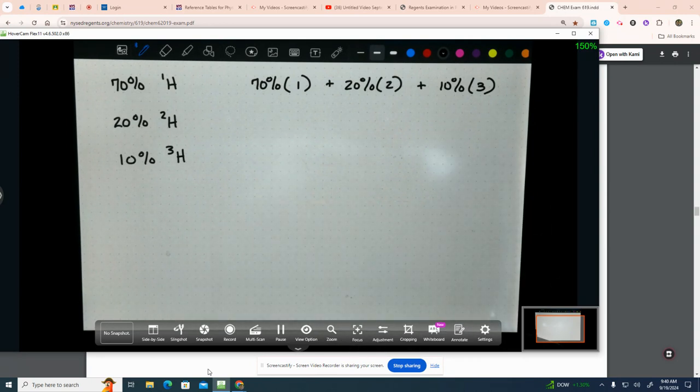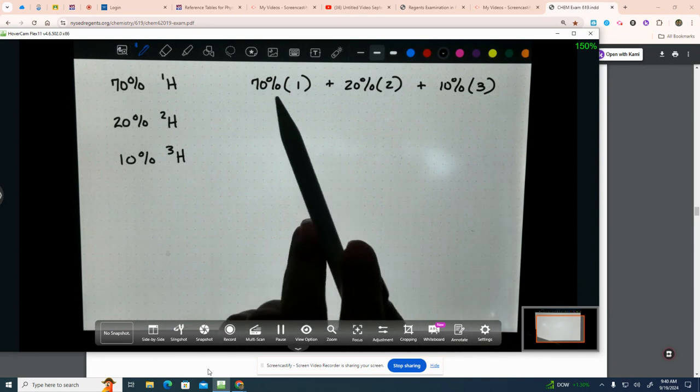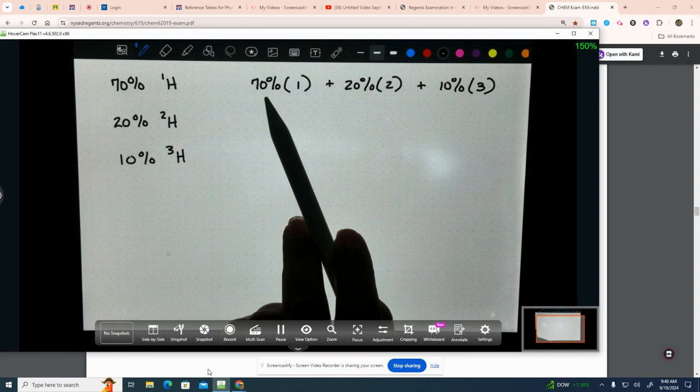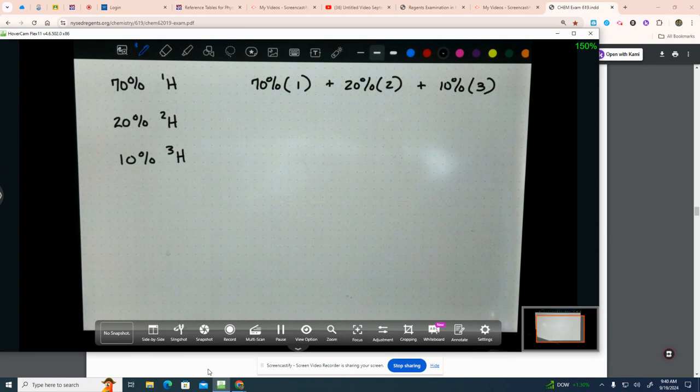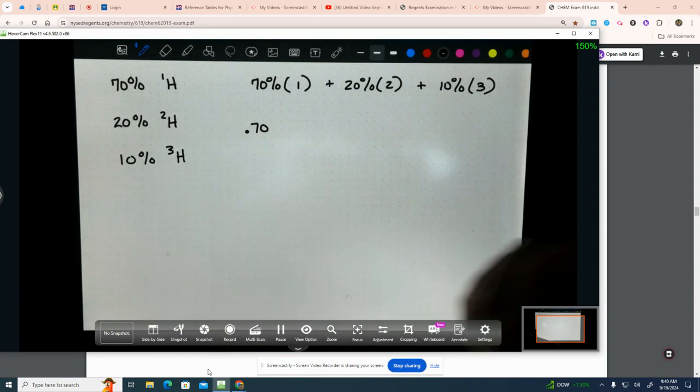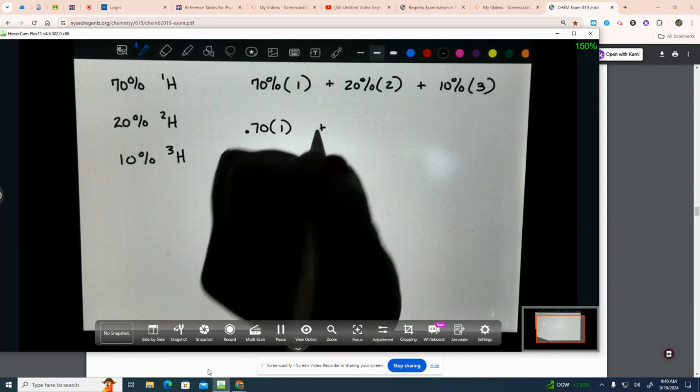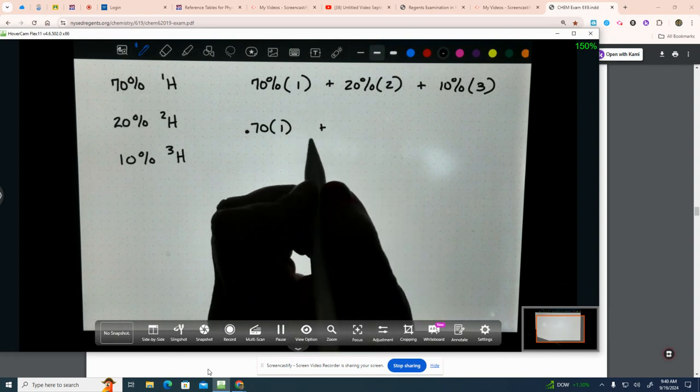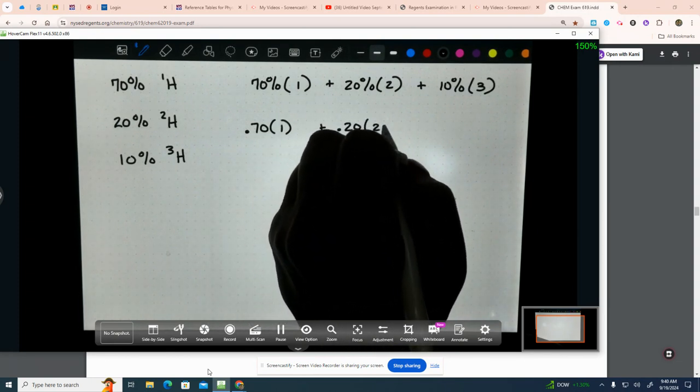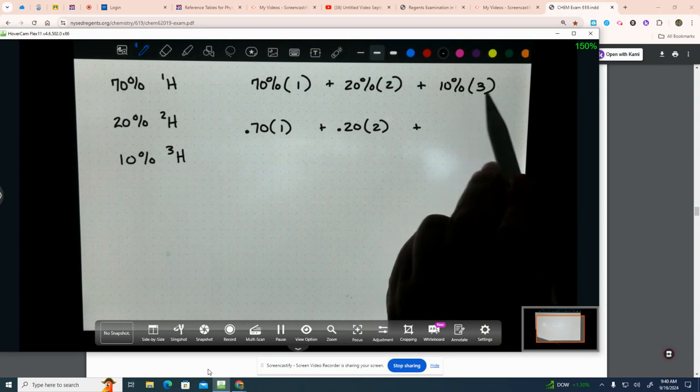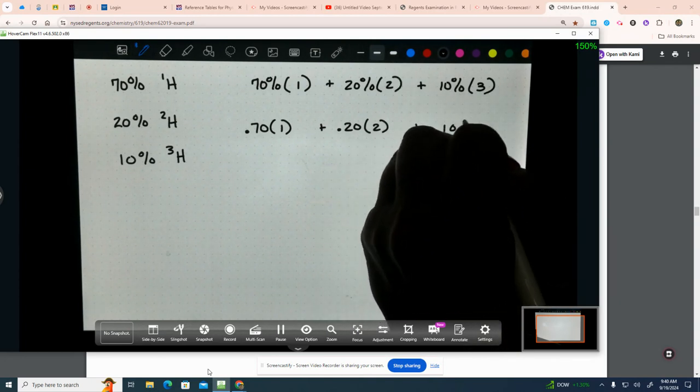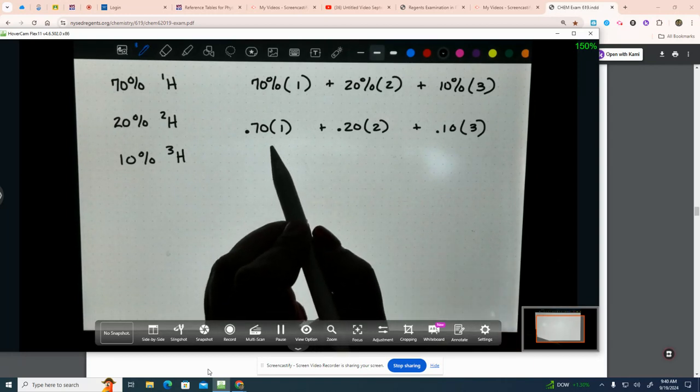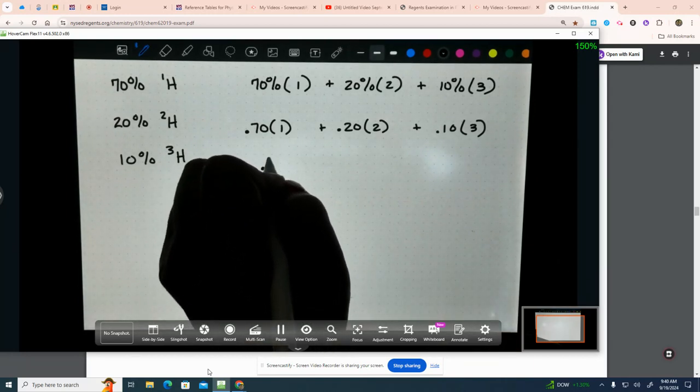So now we have to talk about how do we put that in our calculators. When you put a percent into your calculator, you need to change it to a decimal. How do you change 70% to a decimal? 0.70. You move the decimal two places to the left. All I'm doing is rewriting this again. So, 0.7 times 1. Plus, 20% change it to a decimal. 0.20 times 2. Plus, 10% times 3. 0.10 times 3.